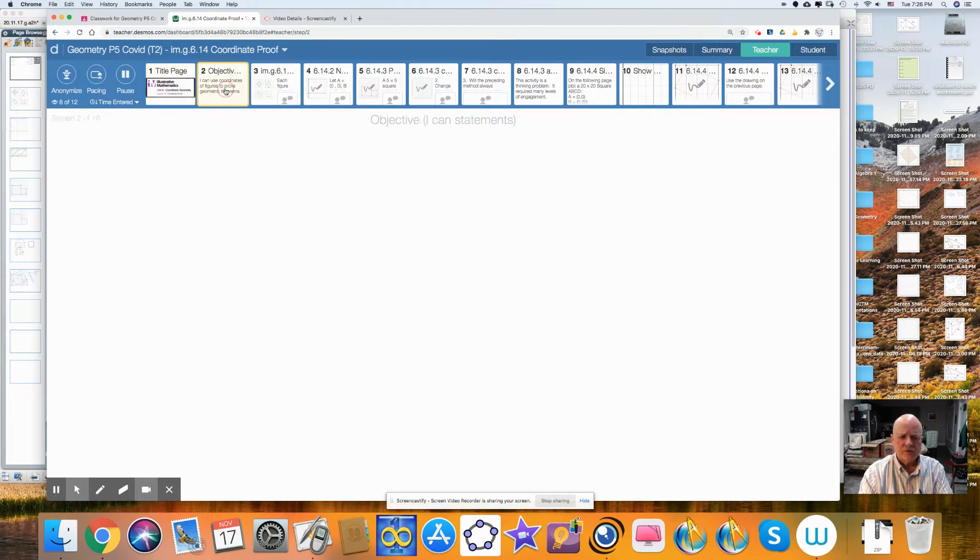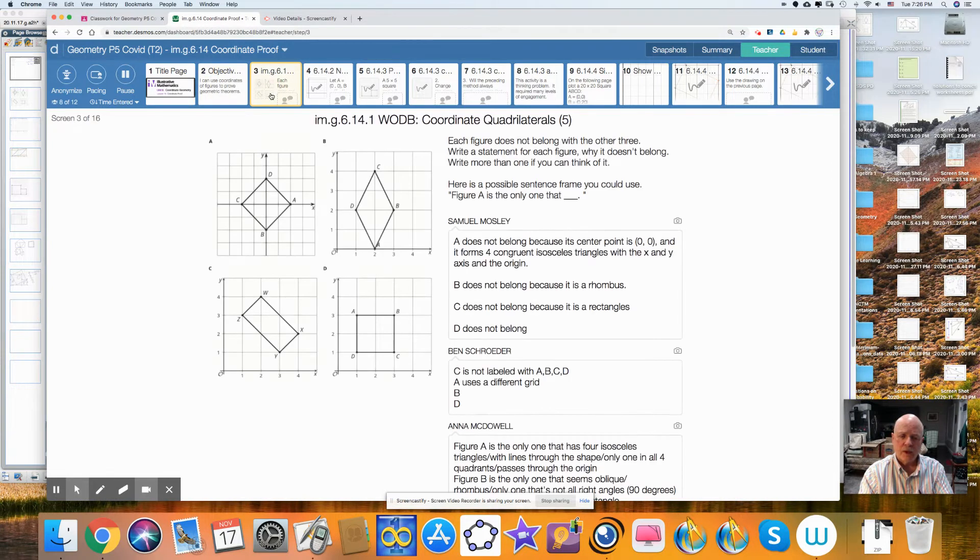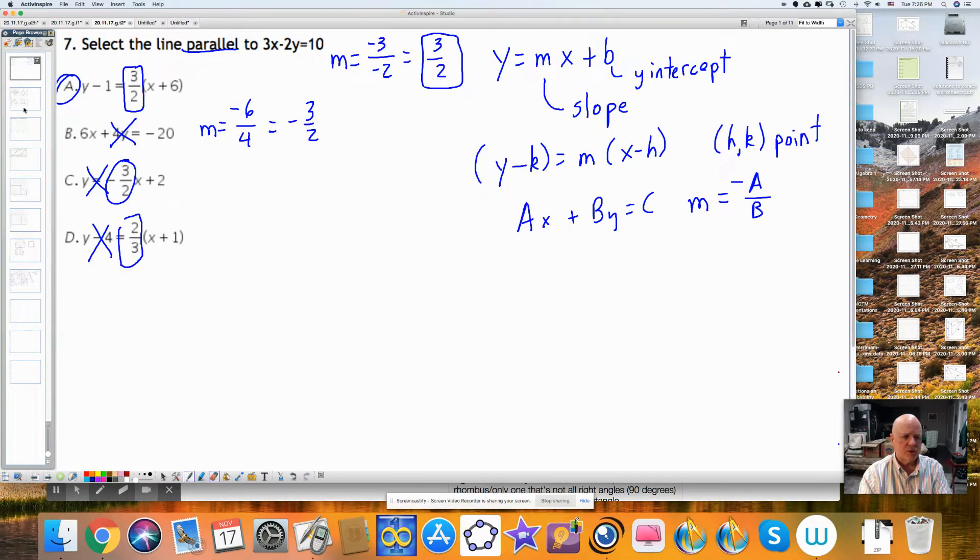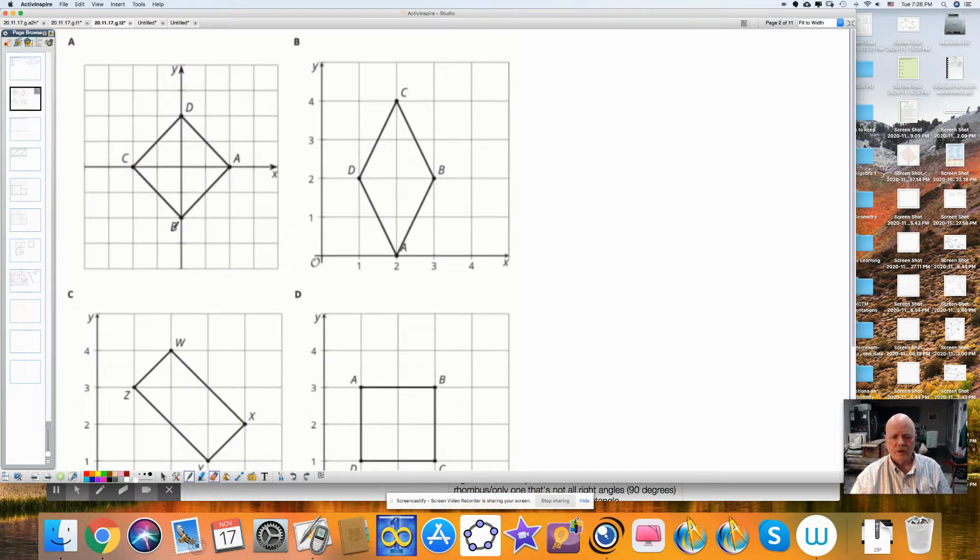The objective of today's lesson is to use coordinate figures to prove geometric theorems. We started off with a 'which one doesn't belong?' Some of the comments that were made: A doesn't belong because it doesn't show the axis numbers like this does. This begins at the origin. This is also the only one with all four points on the axes. It also makes four congruent isosceles triangles with the axes.